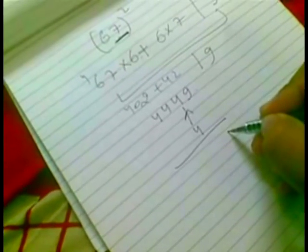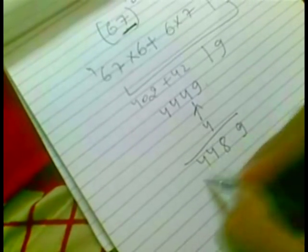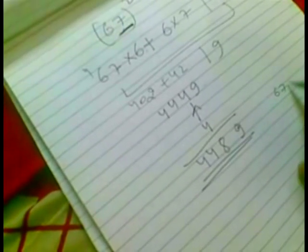What it would be? 9, 8, 4, 4. This is the square of number 67.